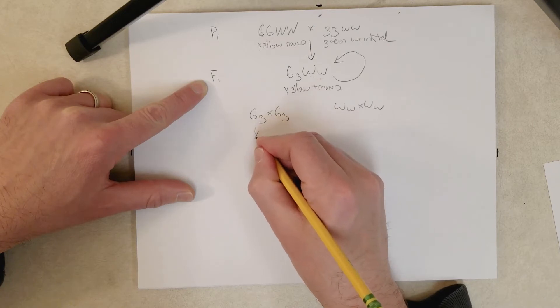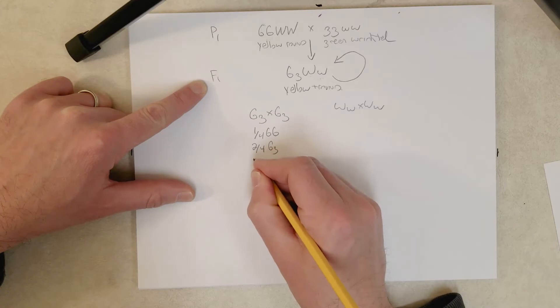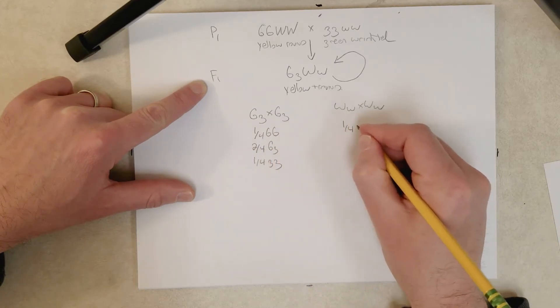And what do we get? We get one quarter GG, two quarter G little g, one quarter two little g's, same thing over here.